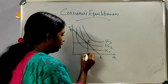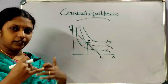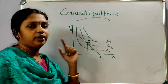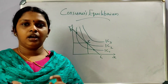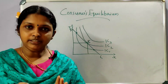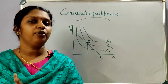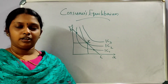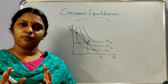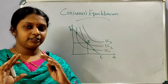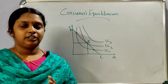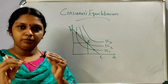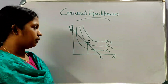The consumer will get the equilibrium point. Consumer equilibrium is the point where the consumer needs to be — the right point — to get maximum satisfaction and make the optimum selection.